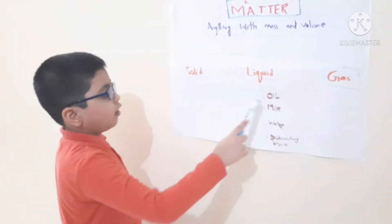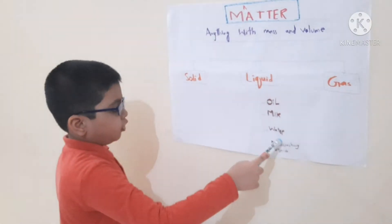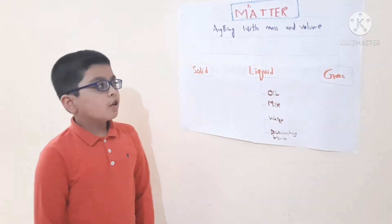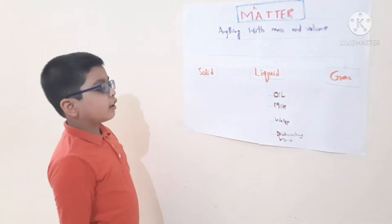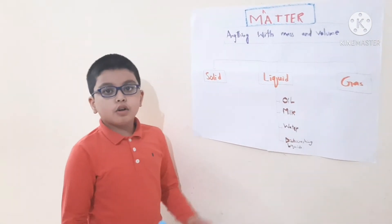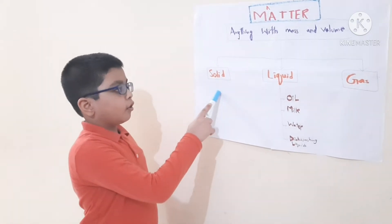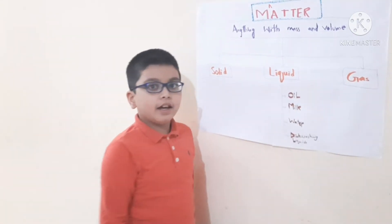The liquid examples are oil, milk, water and dishwashing liquid. Liquid is anything that has particles that are not close to each other, packed up like solid or scattered away like gas.